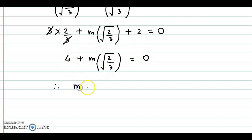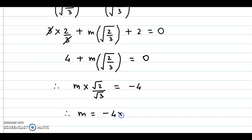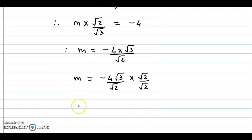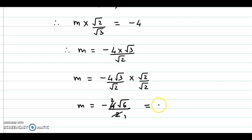Transferring 4 to the right-hand side, this can be written as m into root 2 upon root 3 equal to minus 4. Therefore, m is equal to minus 4 into root 3 by root 2. If we rationalize the denominator, we multiply and divide by root 2. So m equals minus 4 times root 3 into root 2, which is root 6, over root 2 into root 2, which is 2. Finally, the value of m is minus 2 root 6.